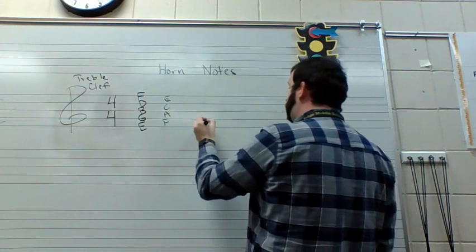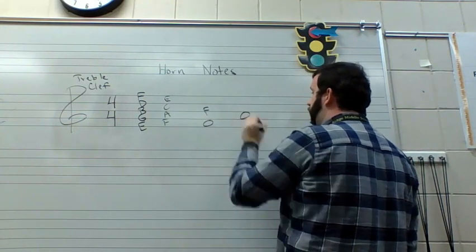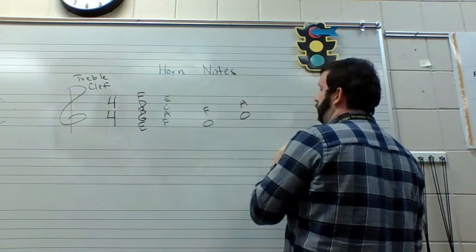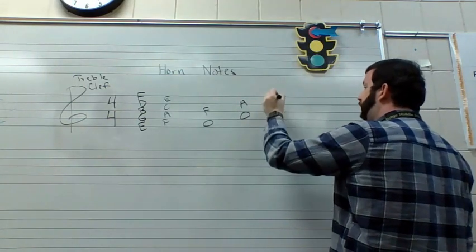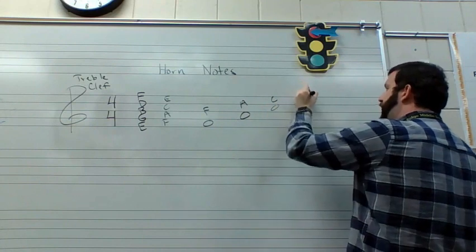So that means if I put a note in the first space that note is F because that's the first letter of face. A note in the second space will be F-A, it will be A. The third space F-A-C, and the fourth space F-A-C-E.